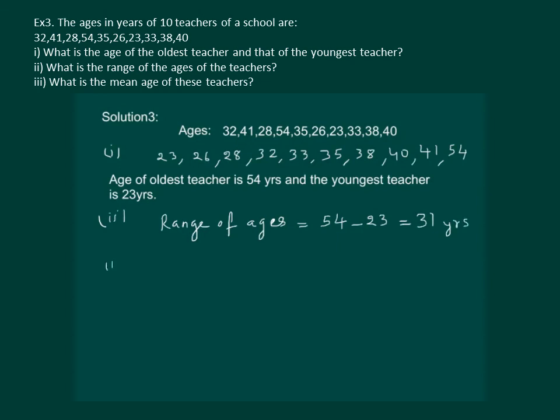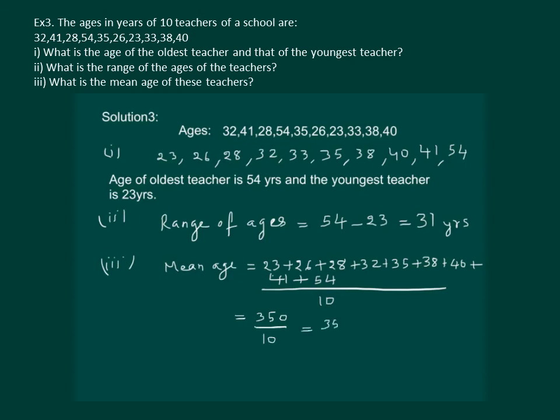Third part of the same question is, to find the mean age of all these teachers. So, mean age would be equal to sum of all the observations, divide by the number of observations, which is equal to 350 by 10, that is equal to 35 years.